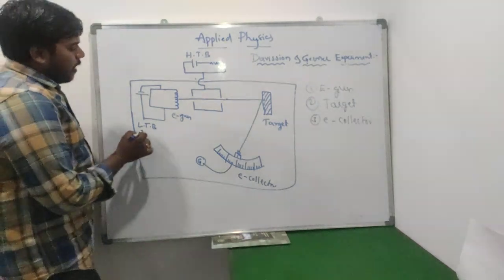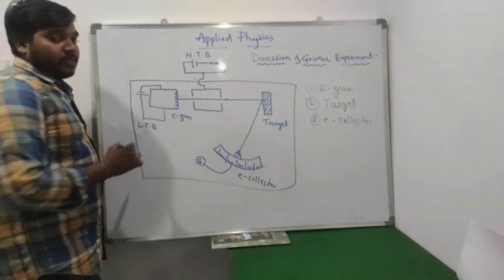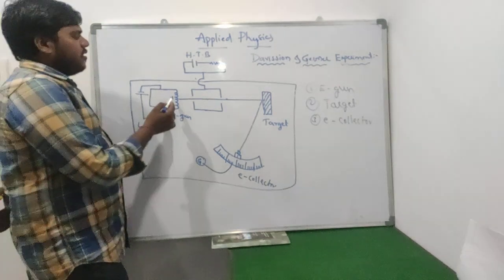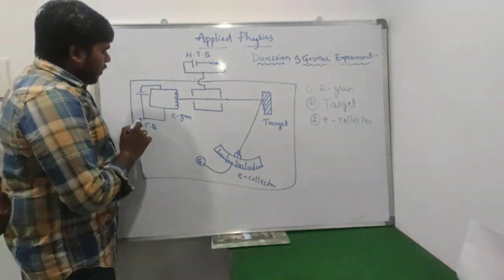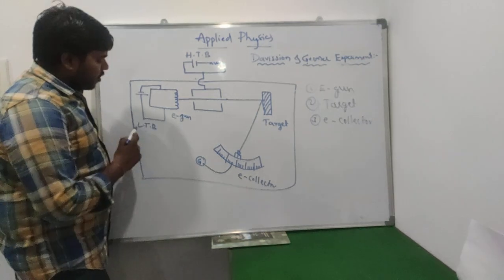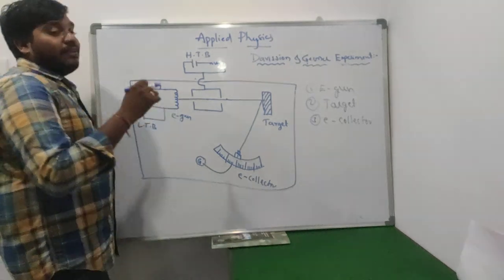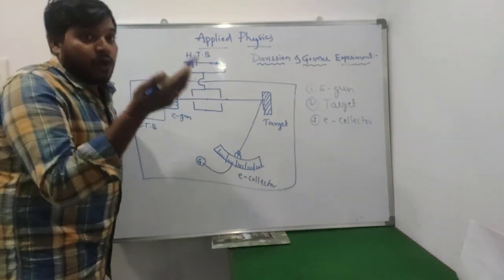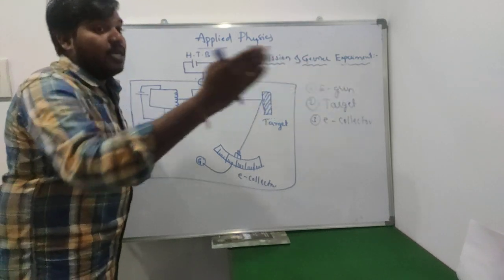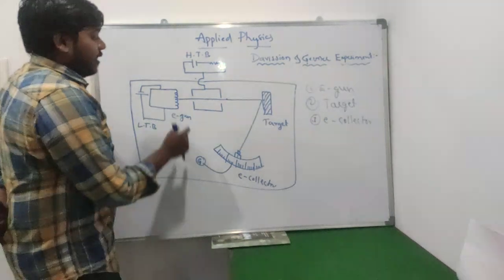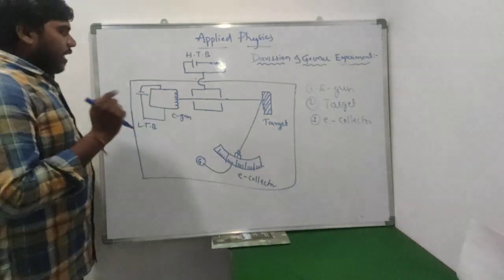Within the diagram we have a low tension battery connected to the electron gun, which is essentially a filament. Whenever we supply a certain voltage from the low tension battery to the electron gun, it heats up and produces electrons — a large number of electrons — forming what is known as the electron beam.